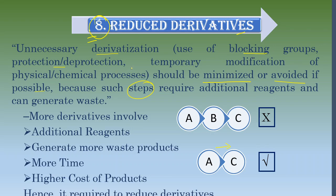I hope you remember, in the case of benzene electrophilic substitution reactions, we normally have ortho-, meta-, and para-directing groups. When we have a meta-directing group, what we do is protect a position, carry out the reaction, and then deprotect that particular position. We also sometimes use a blocking group. Such temporary modification of physical or chemical processes should be avoided as per Principle 8.